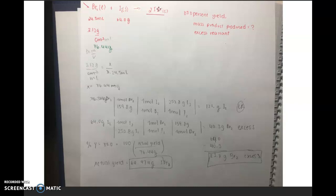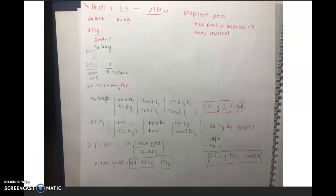What you did was you began with determining the mass of bromine. From the mass of bromine, you calculated how much iodine is required to consume that much bromine. This is the mass of I₂ needed.